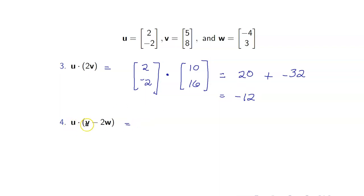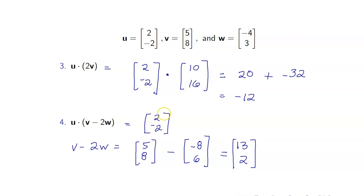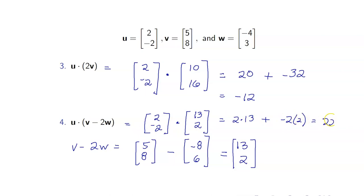And lastly, we have u dot (v minus 2w). Let us compute first for v minus 2w. This is 5, 8 minus 2w which is negative 8, 6. This gives 5 minus negative 8, which is 13, and 8 minus 6, which is 2. Hence, we want the dot product of 2, negative 2 with 13, 2. This is equal to 2 times 13 plus negative 2 times 2, which is equal to 22.